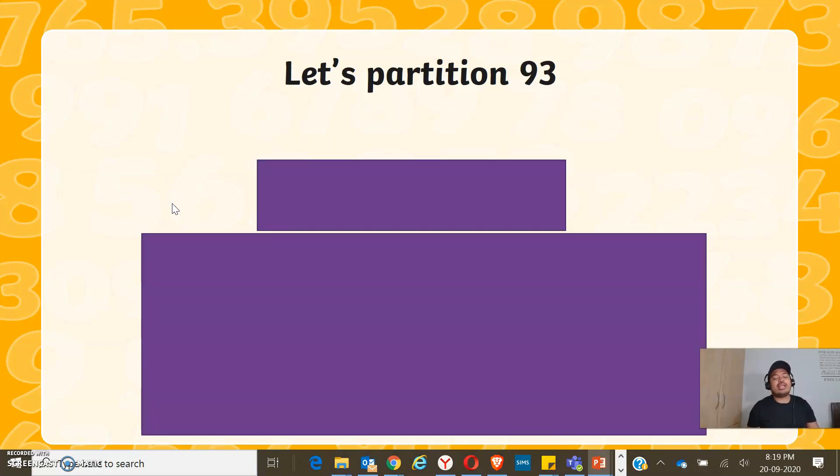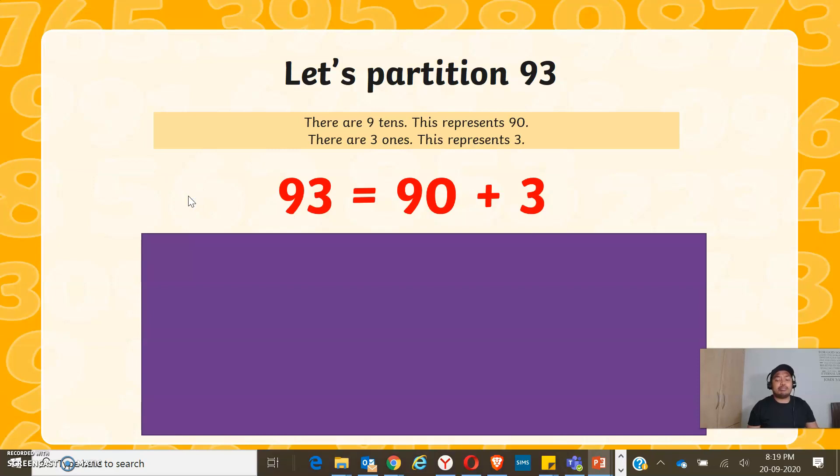Now let's partition 93. Again, remember, 93 is made up of 9 tens that represents 90. There are 3 ones that represents 3. 93 is 90 plus 3.